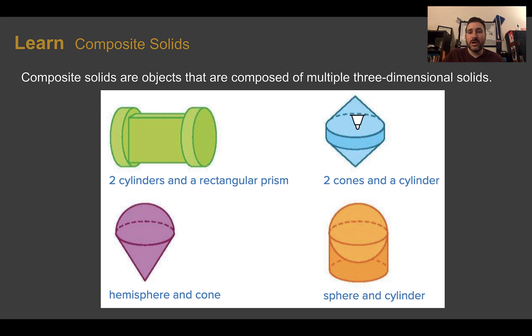In the blue one here, I have two cones and a cylinder in the middle. For this one, that's almost shaped kind of like an ice cream cone, I have a hemisphere, so half of a sphere, and a cone.